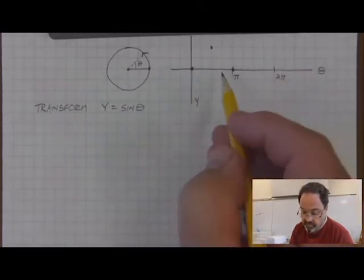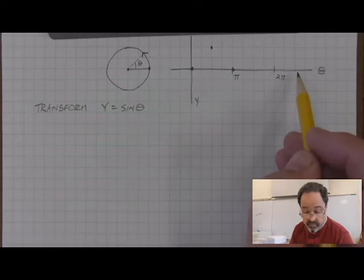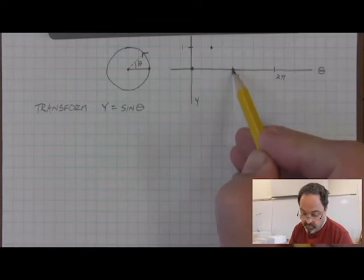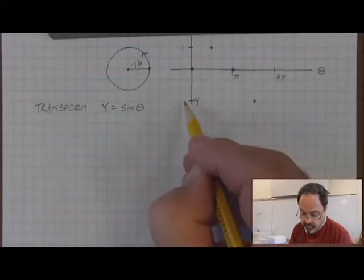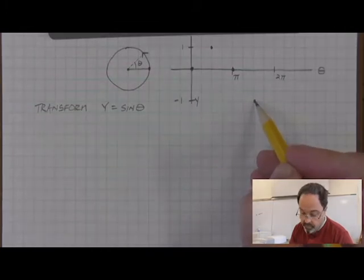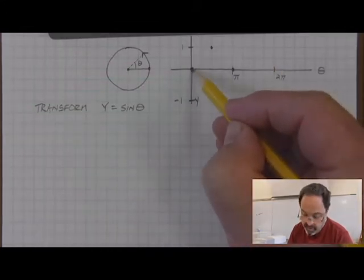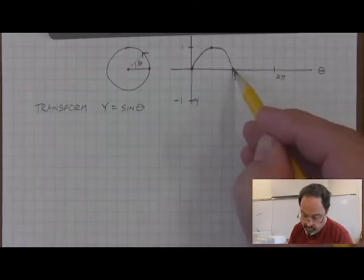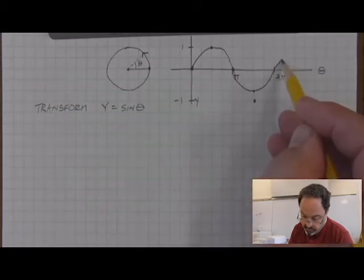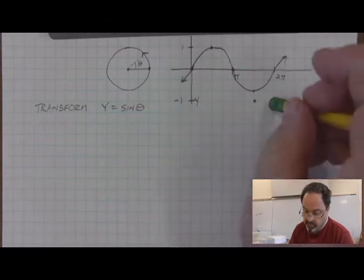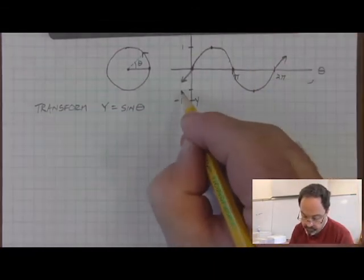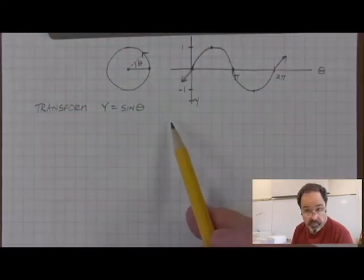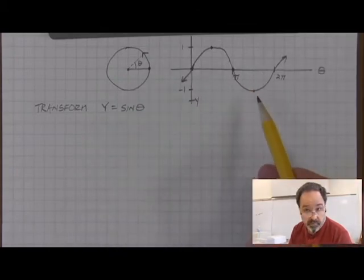A complete circle in radians is two pi. So my horizontal axis is labeled with angle measures in radians. The point travels up to a height of one, back down to zero at the half circle, down to negative one at three quarters of the way around, and then back up to zero at two pi to complete. The curve that connects these points is called a sinusoidal curve — this is the graph of sine.